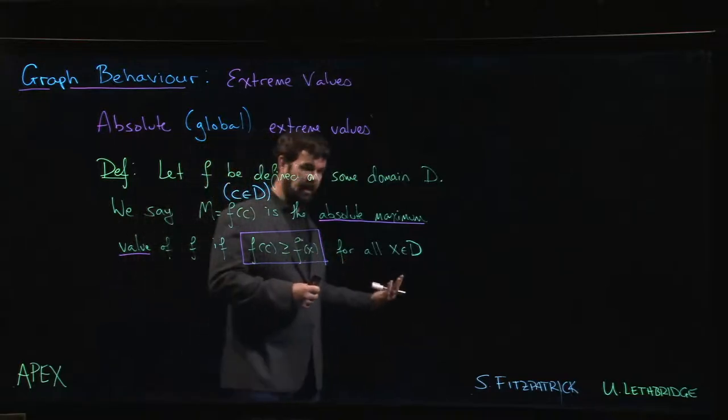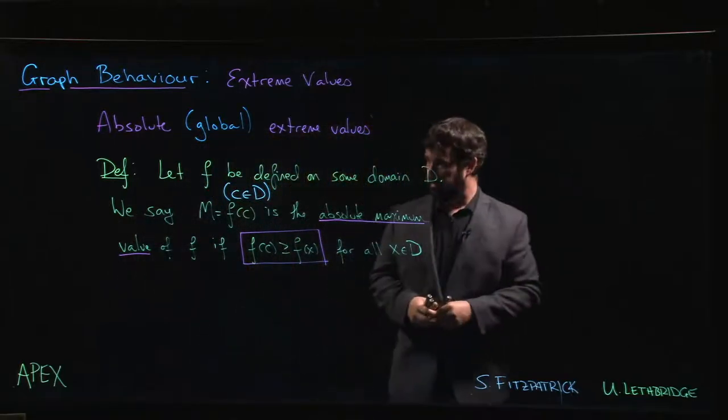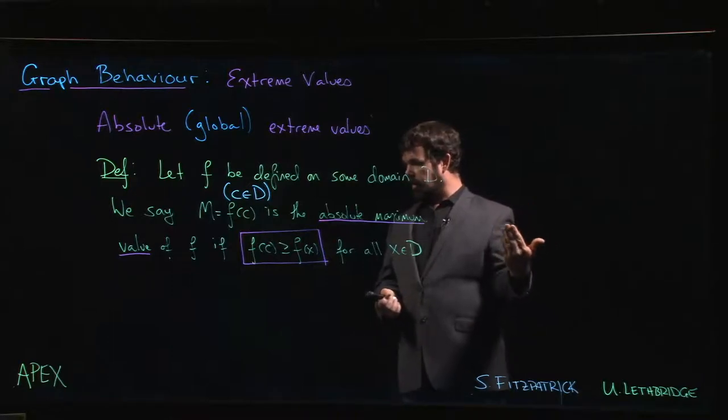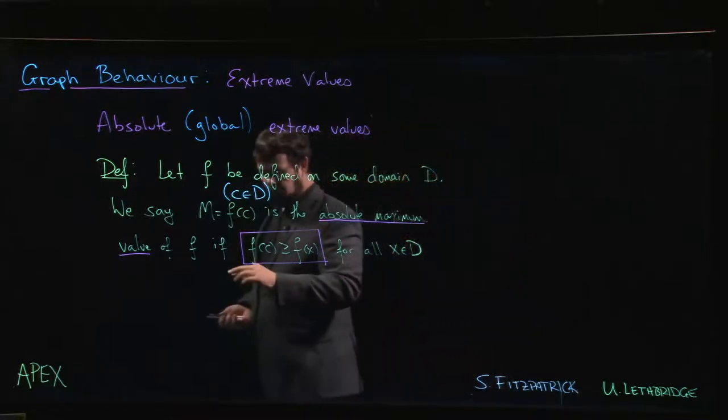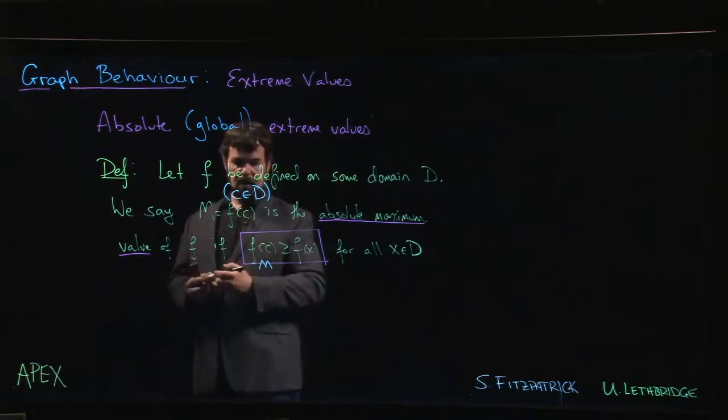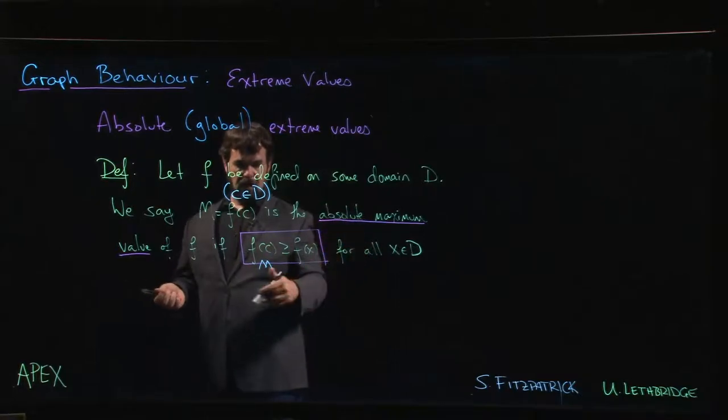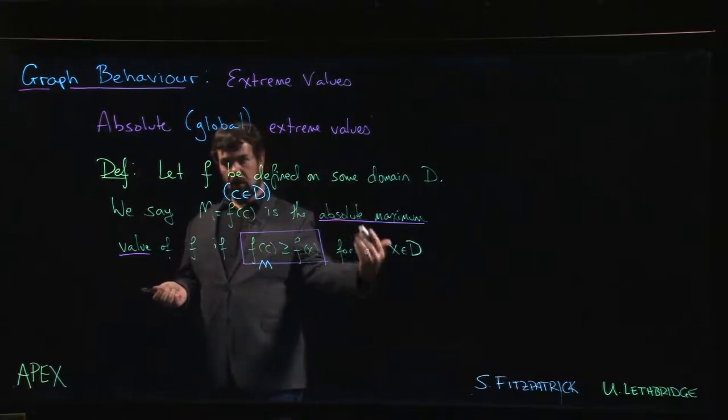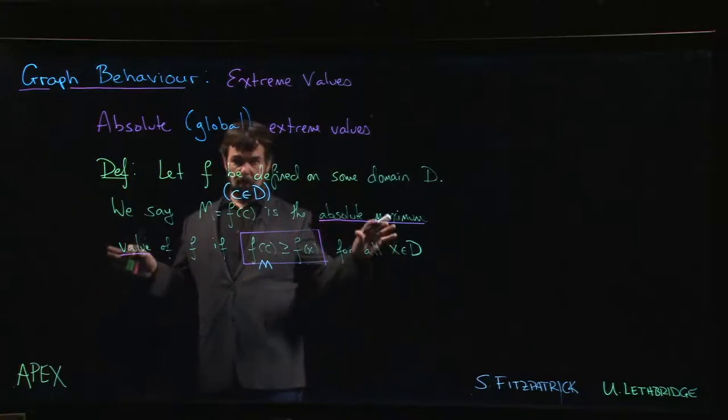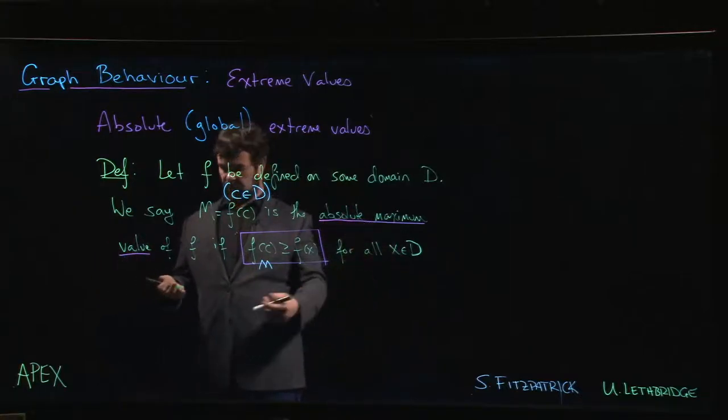We say it's the absolute maximum value if the output that we get from f of c, if it's bigger than or equal to every other output on the domain. So it's the biggest possible output that we can get from our function over all possible inputs. That's the absolute maximum.